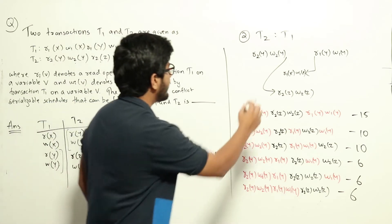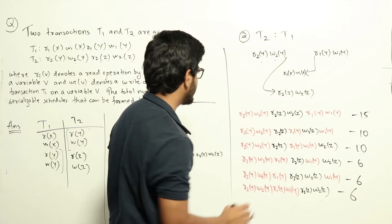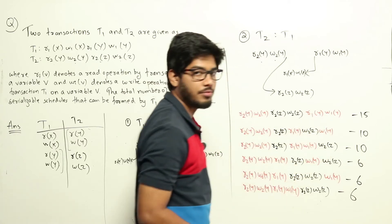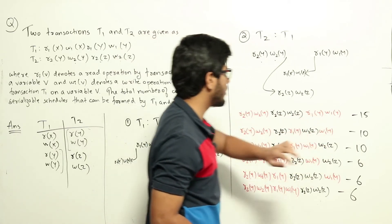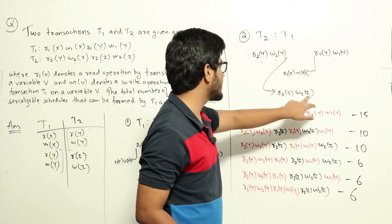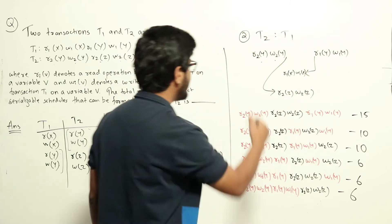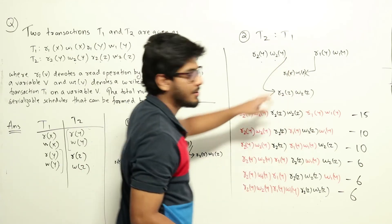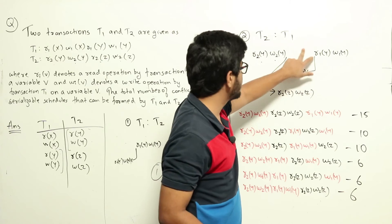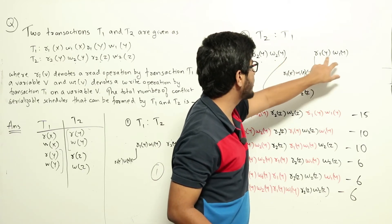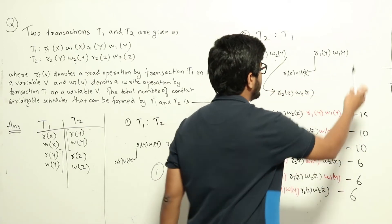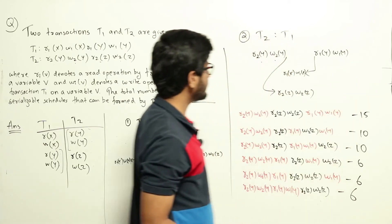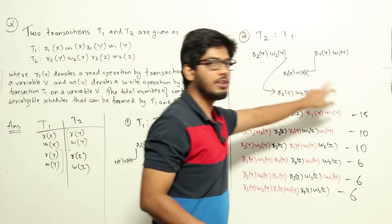We fix the four conflict operations in order: R2(Y), W2(Y), R1(Y), W1(Y). Now R2(Z) and W2(Z) must appear after R2(Y)/W2(Y). Looking at the available gaps, there is one gap after W2(Y) before R1(Y), one gap between R1(Y) and W1(Y), and one gap after W1(Y) — giving us three gaps in which to place R2(Z) and W2(Z).